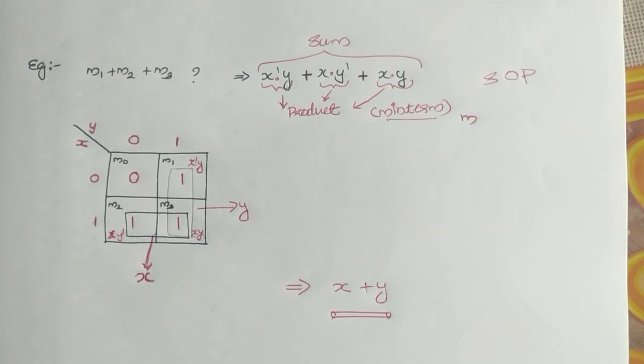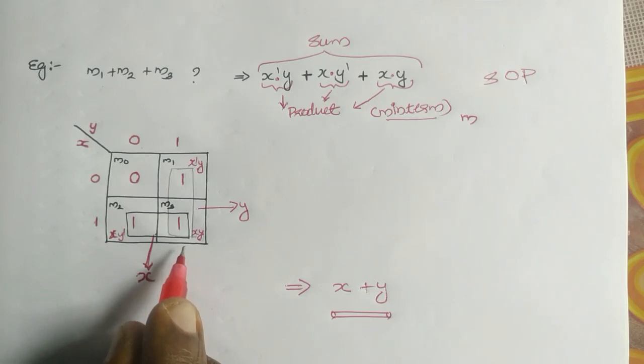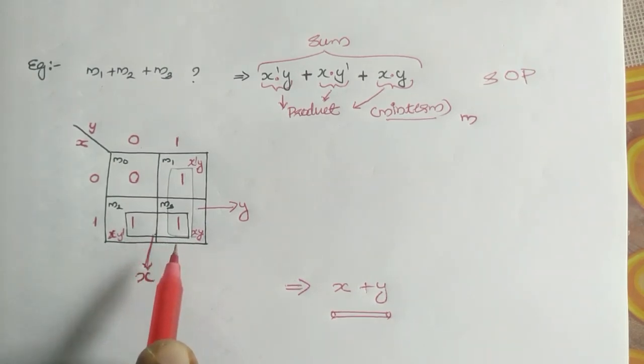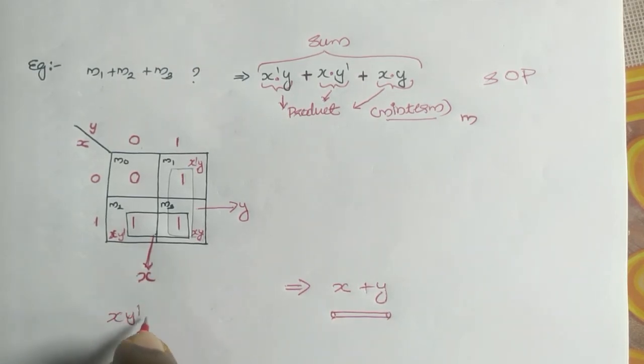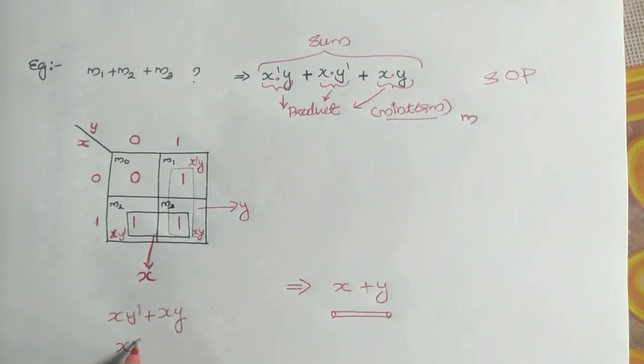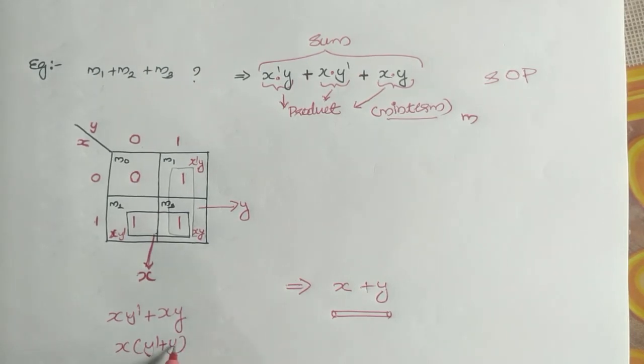For further explanation, if you are reducing using basic algorithms and rules, you can have X, Y bar plus X, Y. So we are making X into Y bar plus Y. The Y bar plus Y is 1, so you can have X.